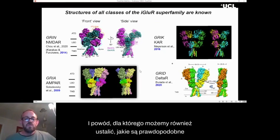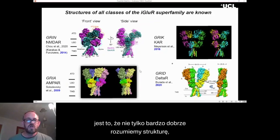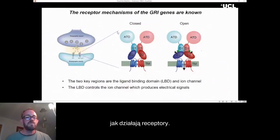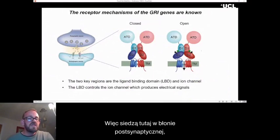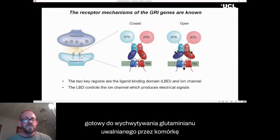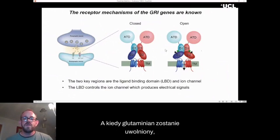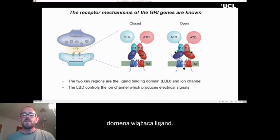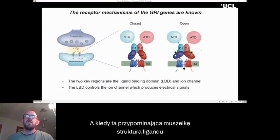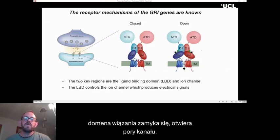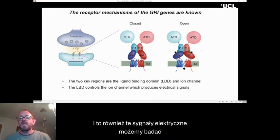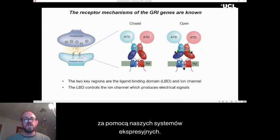The reason we can also work out what they're likely to be doing is that not only do we understand the structure very well, we also understand the mechanisms of how the receptors work. So they sit here in the postsynaptic membrane, ready to catch glutamate released by the presynaptic cell. When the glutamate's released, it binds within this central region, the ligand binding domain. When this clamshell-like structure of the ligand binding domain closes, it pulls open the channel pore. It's this opening that produces the electrical signals in the brain, and it's also these electrical signals that we can examine using our expression systems.